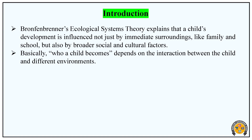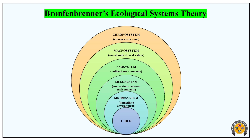Let's talk about the diagram of Bronfenbrenner's Ecological Systems Theory. The theory has multiple systems. First is the Micro System — the immediate environment like parents, families, and neighborhoods. Second is the Meso System.